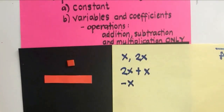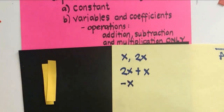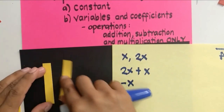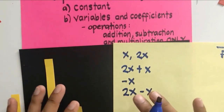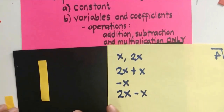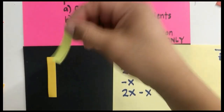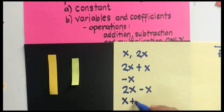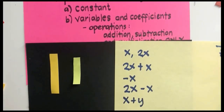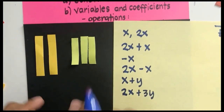Negative 1 is also considered a polynomial. We can also have the subtraction operation: 2x minus x is also a polynomial. This is not limited to the same variables — you can also have another variable y. So x plus y is also a polynomial, and we can have 2x plus 3y as a polynomial as well.